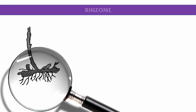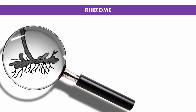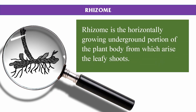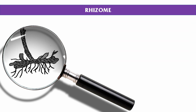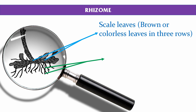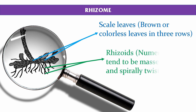The rhizome is the horizontally growing underground portion of the plant body from which arise the leafy shoots. The rhizome is covered by three rows of brown or colorless scale leaves and numerous rhizoids.